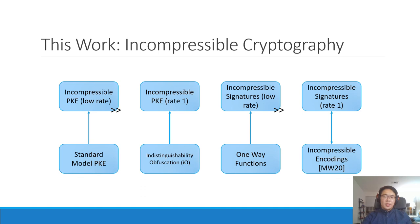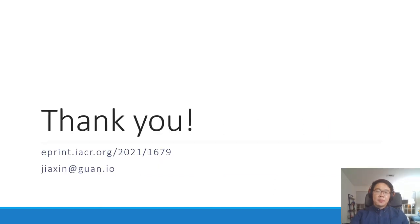If you're interested in these constructions or the security proofs, feel free to look at our ePrint version of the paper. The takeaway message is that for a long time people have used the bounded storage model to prove things information-theoretically. But in this work, together with the previous work on disappearing cryptography, we show that by combining space constraints and time constraints on the adversary, we're able to achieve never-before-possible results. I encourage you to think about what other new possibilities exist when we impose both time and space constraints on the adversary. Thank you.